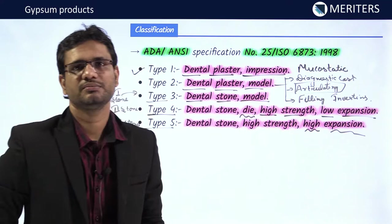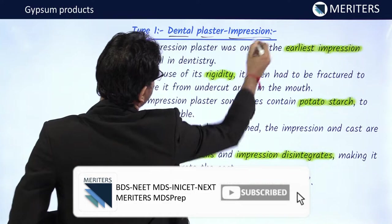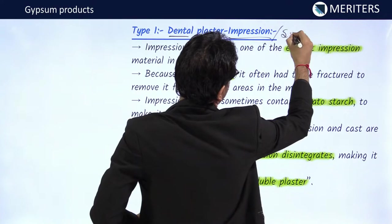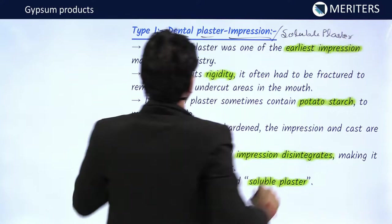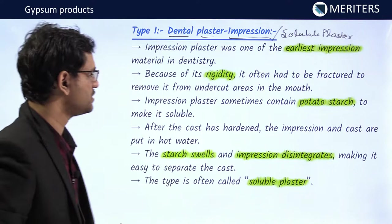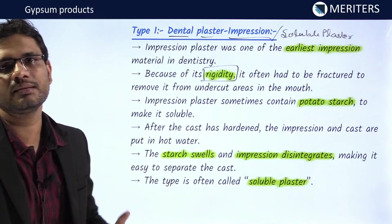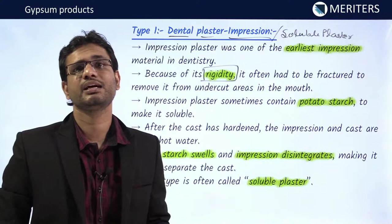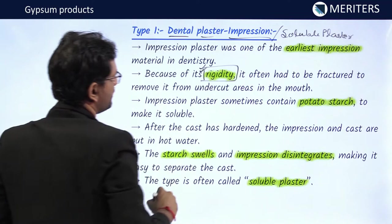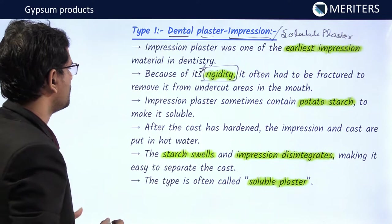Type 1, the dental plaster impression, is also known as impression plaster or soluble plaster. It was one of the earliest impression materials used in dentistry. It is a rigid impression material and cannot be used in denture areas or in areas with many undercuts, as it can fracture when removed.